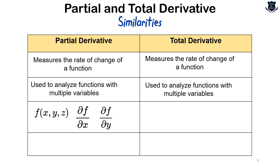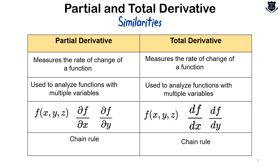Both partial and total derivatives are denoted using similar mathematical notation. For a function f(x, y, z), the partial derivative of f with respect to x is denoted by the curly del f by del x, and with respect to y by del f by del y. The total derivative of f with respect to x is denoted by df by dx, and with respect to y by df by dy. Additionally, the chain rule applies to both partial and total derivatives, allowing calculation of the derivative of a composite function.